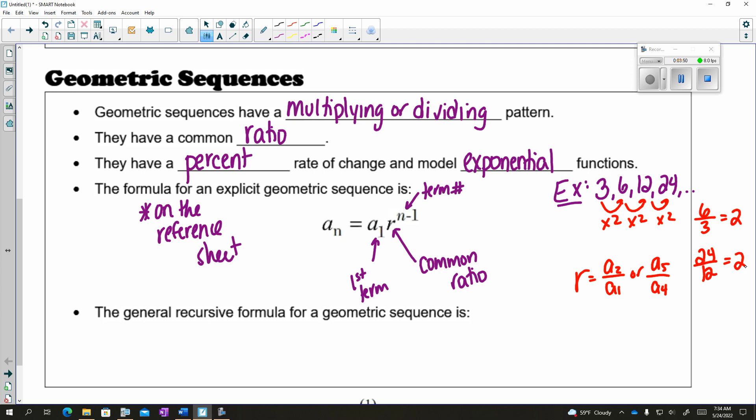And our general rule for recursive, remember we always need two pieces, so A1 is a number. And then any term is the previous term times your common ratio, which more commonly is written with your common ratio as a coefficient in the front, like that. So that's your information for arithmetic and geometric sequences.